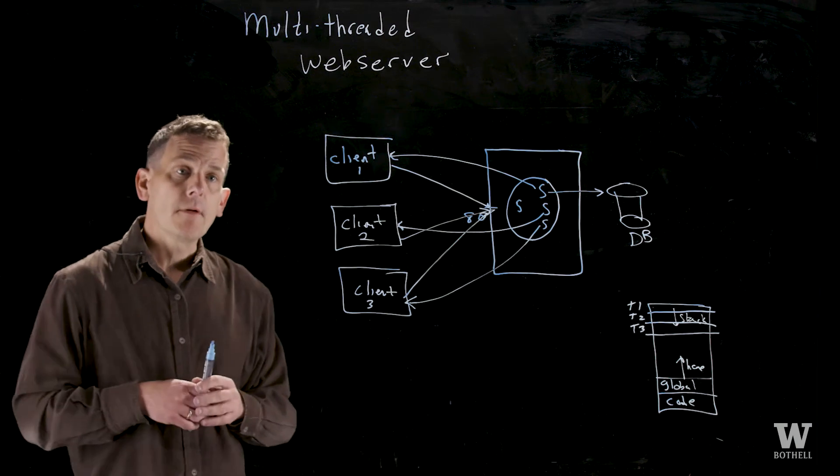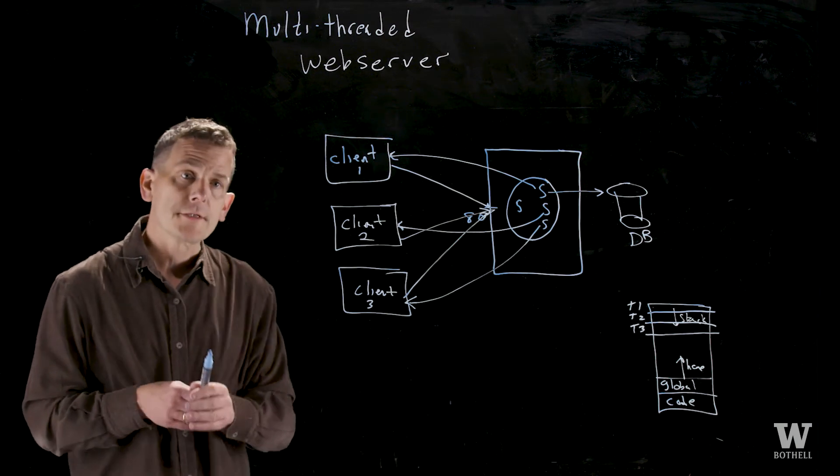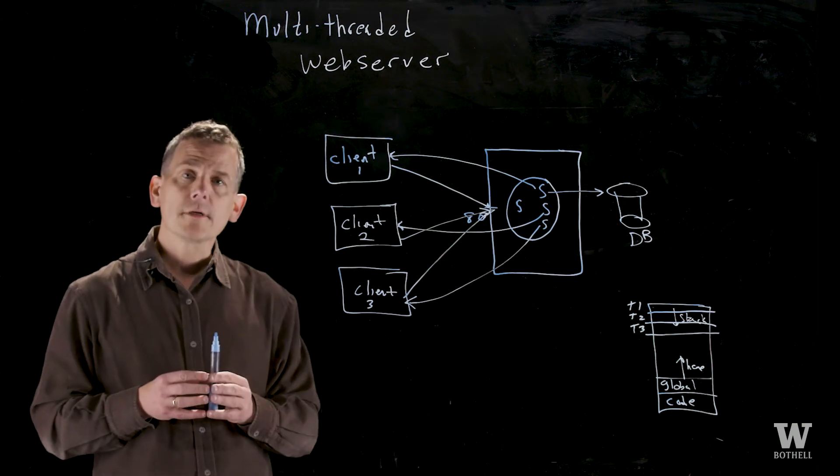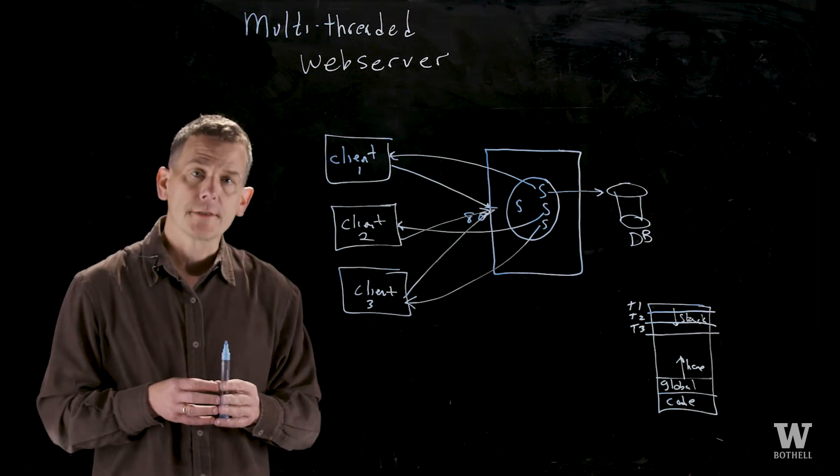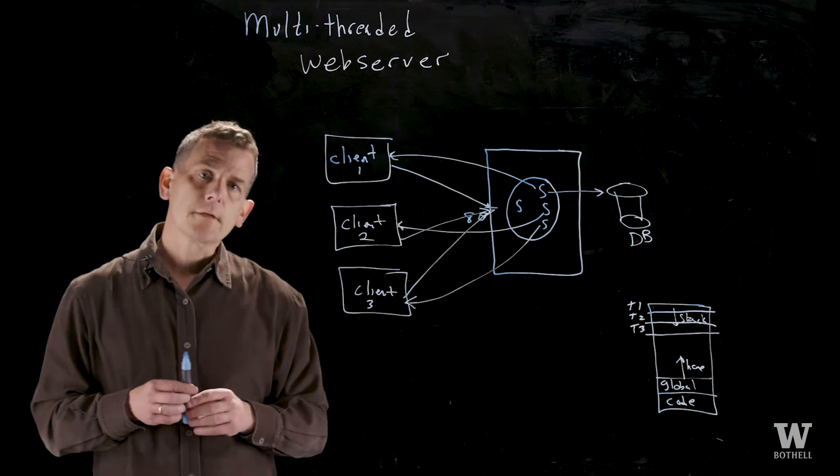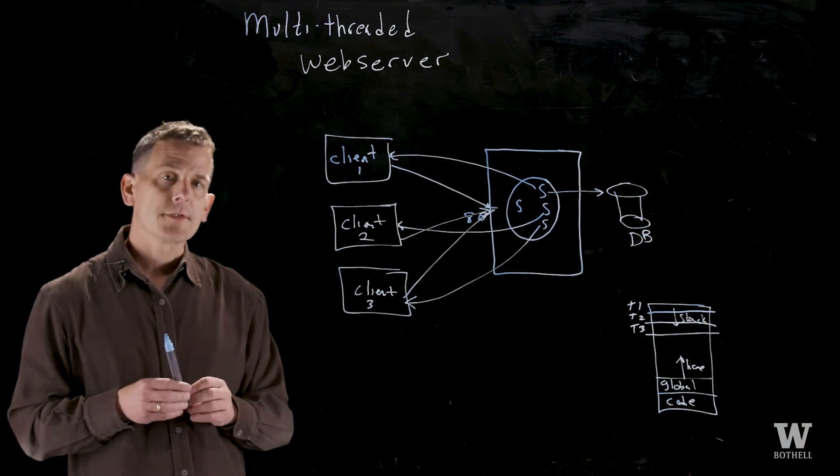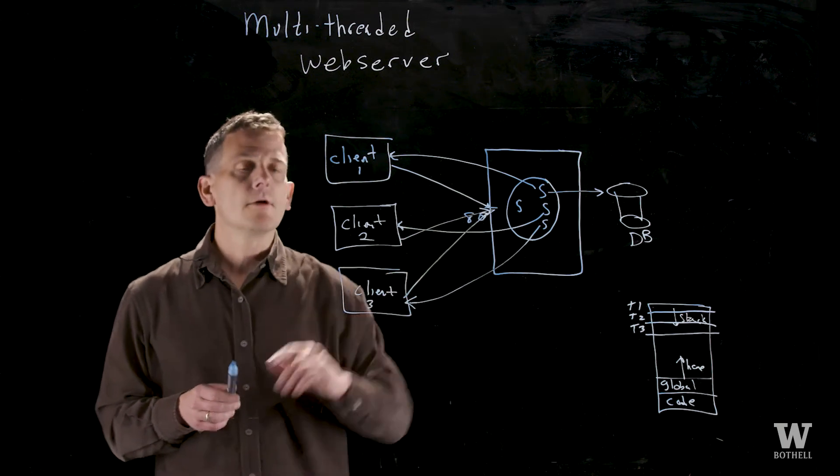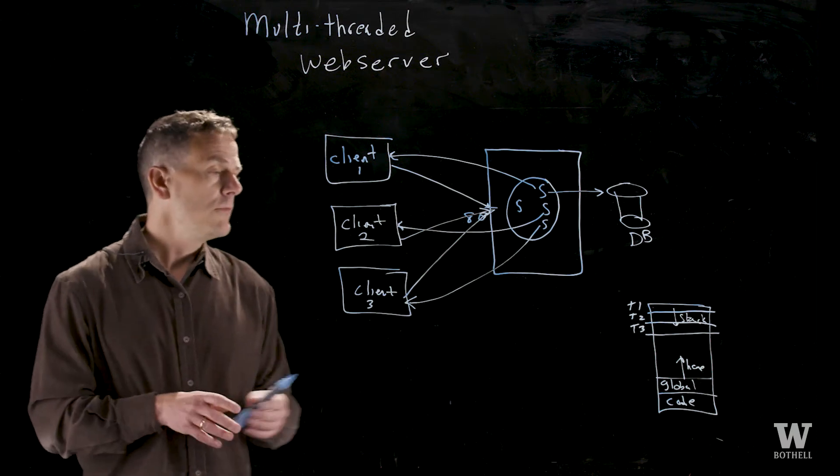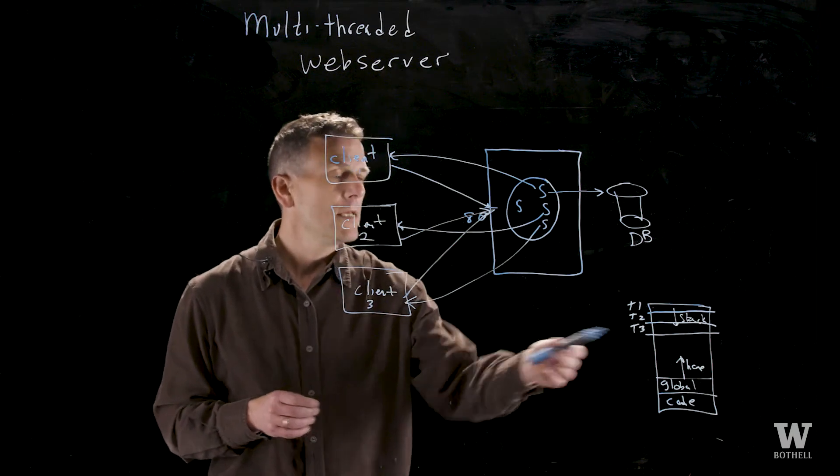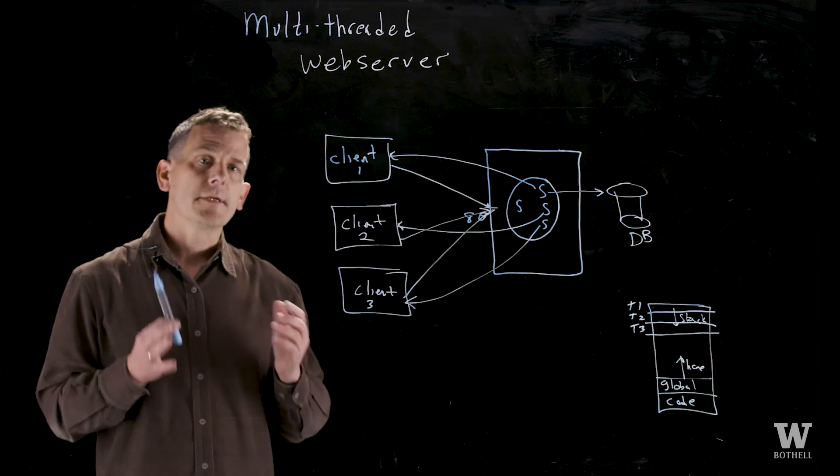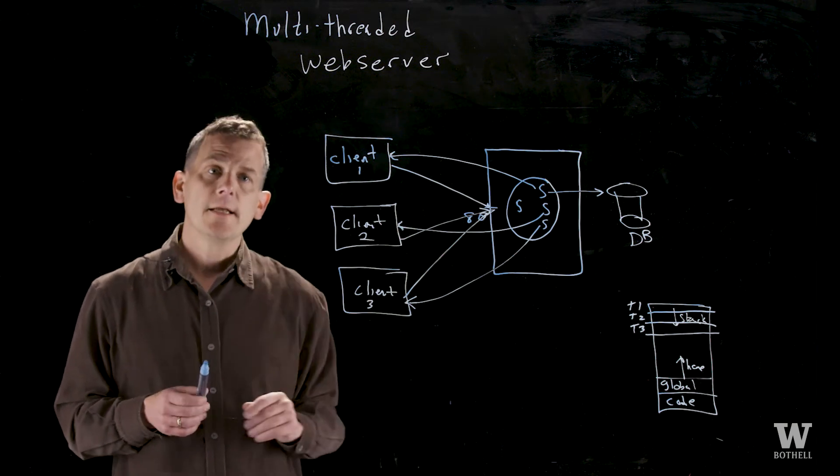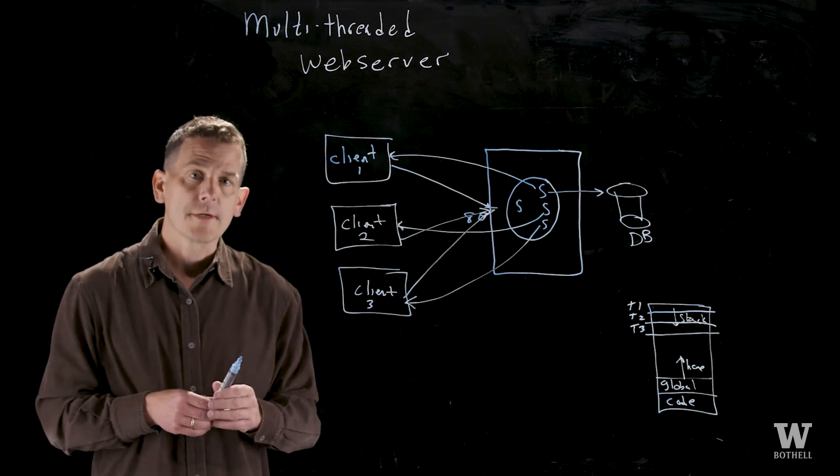One could implement a web server using multiple processes instead of multiple threads. There'll be a couple problems with this. One, threads are much less expensive than processes, and so the number of concurrent requests that could be handled would be much less using processes rather than threads. Two, you'd have contention on your port as well, and three, given that you're sharing code, global data, and heap, it's very easy to write a single web server that can share data across the threads instead of having to use some sort of IPC to share across processes.